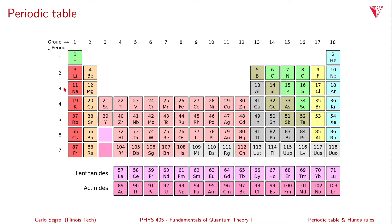Moving to the n=3 row, you fill up the 3s state and the 3p states. Because n=3, you can also have l=2, but those d states don't fill up here — they fill in the next row. The 4s states are actually lower in energy than the 3d states. The l=2 (d) states have a multiplicity of 5 in m, giving 2l+1=5, and with two electrons per state, a total multiplicity of 10. These are the transition metals filling the d states. You fill the 4s state first, then the 3d states, then the 4p states.